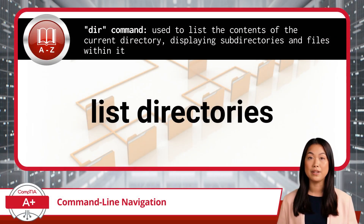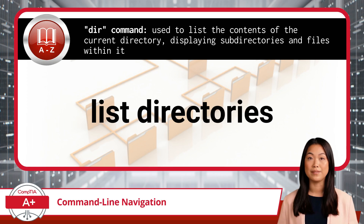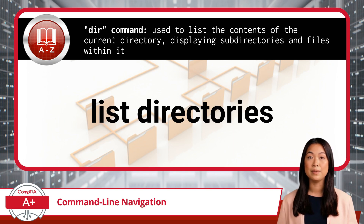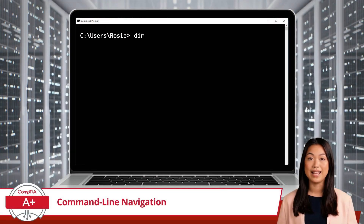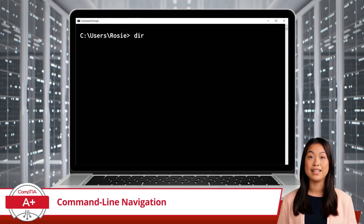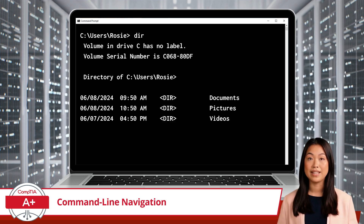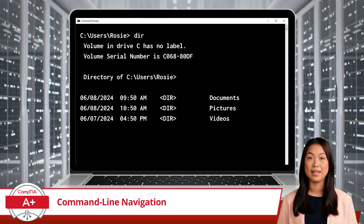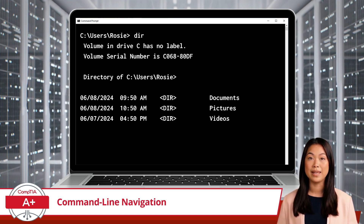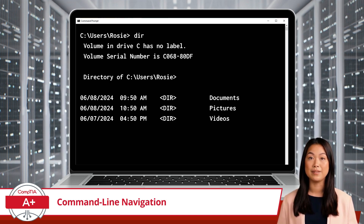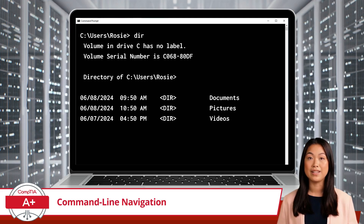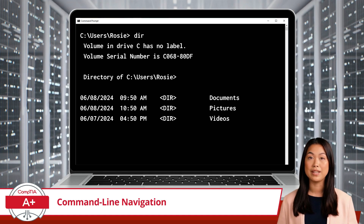Next, we have the DIR command, which is used to list the contents of the current directory, displaying subdirectories and files within it. This command is particularly useful for quickly viewing the contents of a directory and obtaining information about the subdirectories and files stored there. When you type DIR and hit enter, you'll see a detailed list of everything in your current location. For instance, if you're in Rosie's folder and type DIR, you'll see subfolders like Documents, Pictures, and Videos. Using the DIR command is like having a quick peek inside to see what's available. With CD and DIR in your toolkit, you can navigate and explore your computer's file structure like a pro.